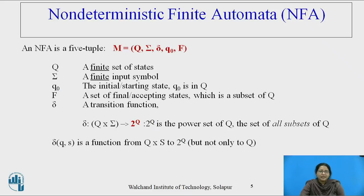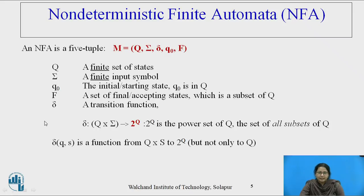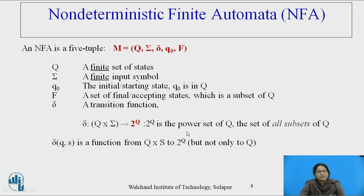Non-deterministic finite automata is the same as DFA with five tuples: Q, a finite set of states; alphabet, a finite set of input symbols; Q0, the initial or starting state which belongs to Q; F, a set of final or accepting states which is a subset of Q. Here is the difference: in DFA, the machine in any state by processing a single symbol either remains in the same state or moves to the next state. But in NFA, the machine in any state by processing a single symbol may move to 2 raised to Q — that is the power set of Q, the set of all subsets of Q.